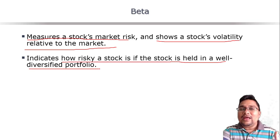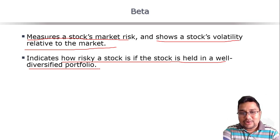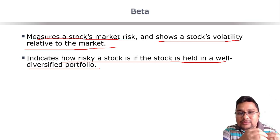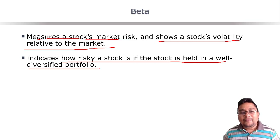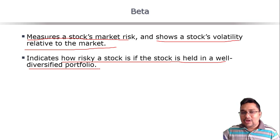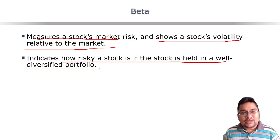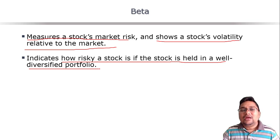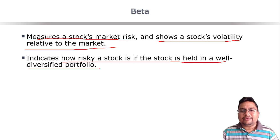Beta indicates the riskiness of an asset, stock, security, or business if held in a well-diversified portfolio where the diversifiable portion of risk — the unsystematic or idiosyncratic risk — has already been eliminated. The only remaining risk is systematic risk, and beta is the measure of that. If you can estimate the beta of an asset, that is the relevant risk associated with it when held as part of a well-diversified portfolio.